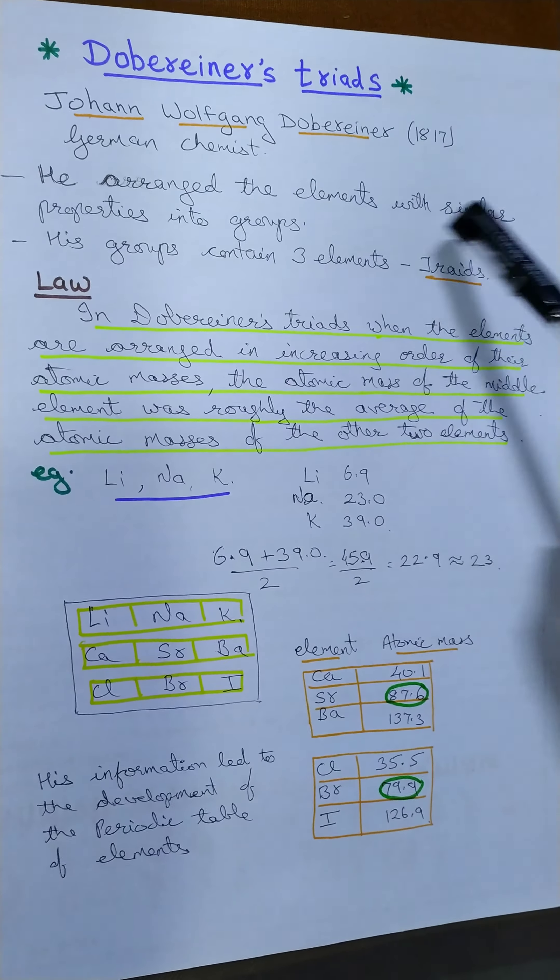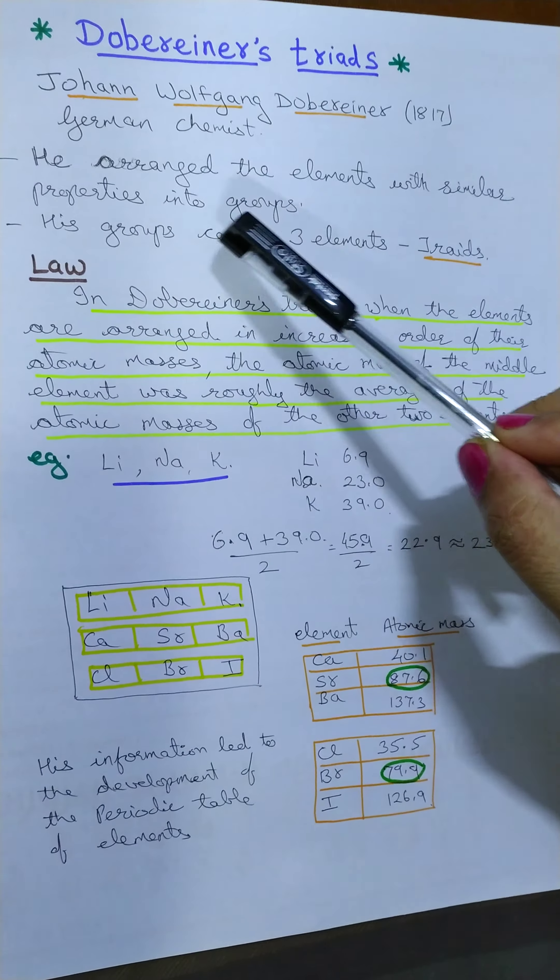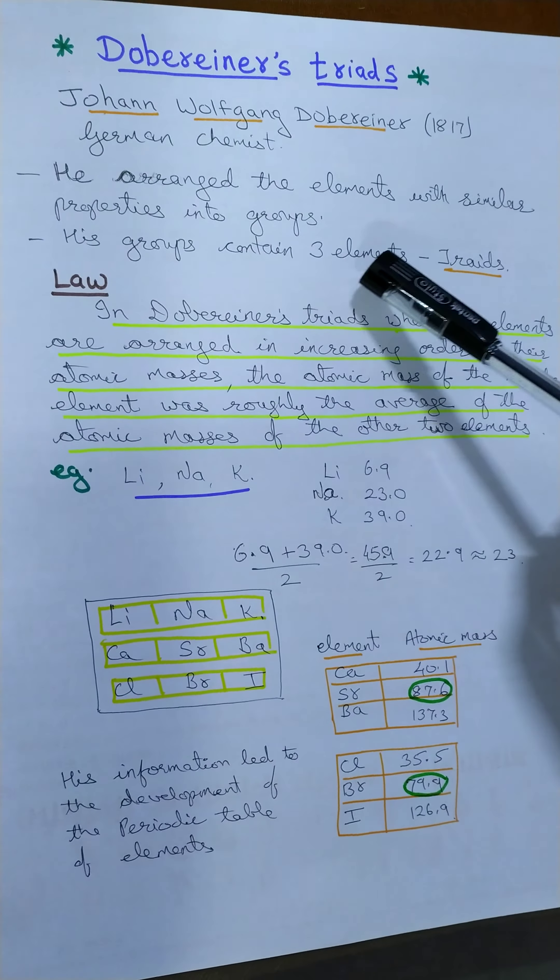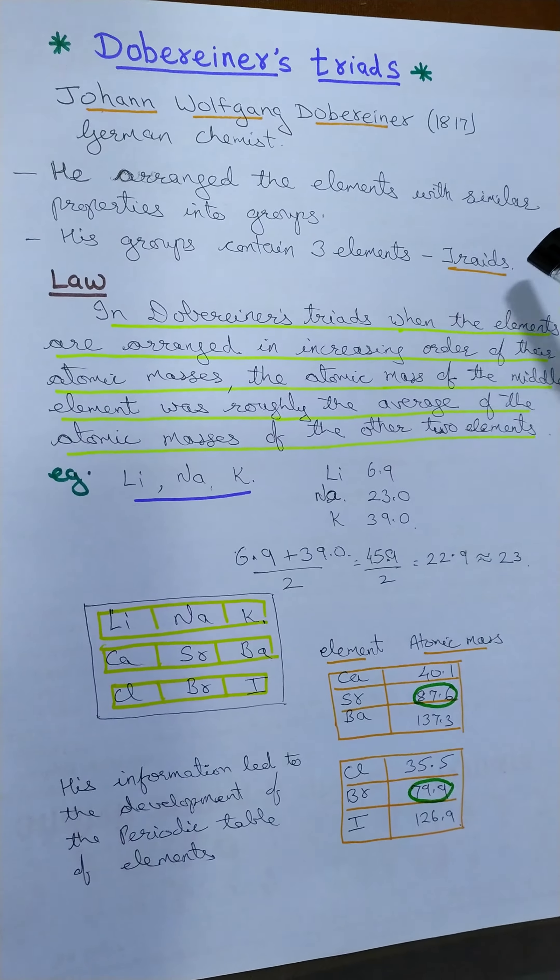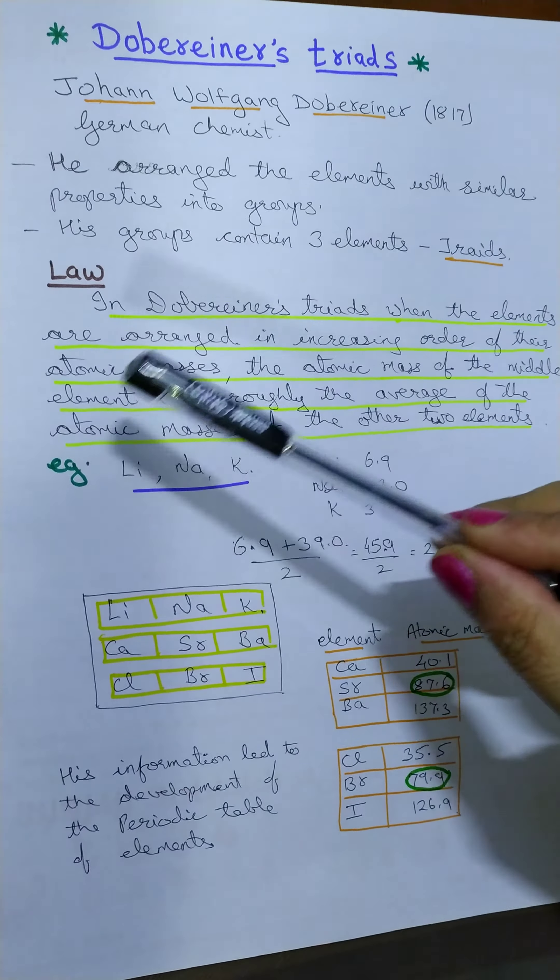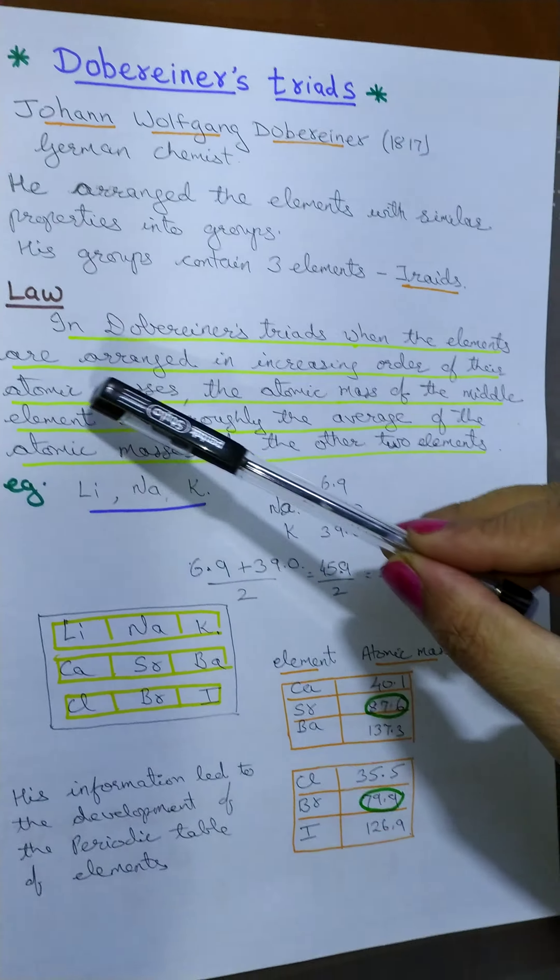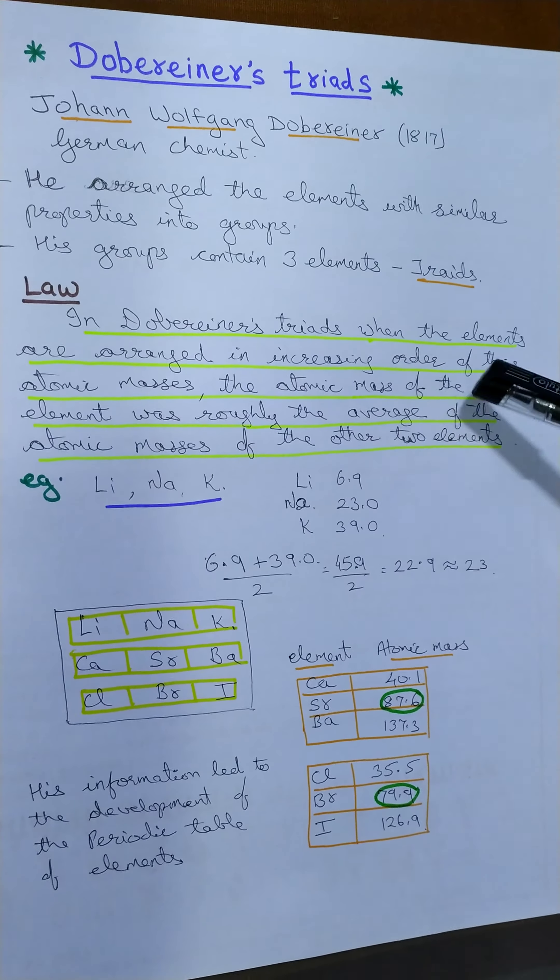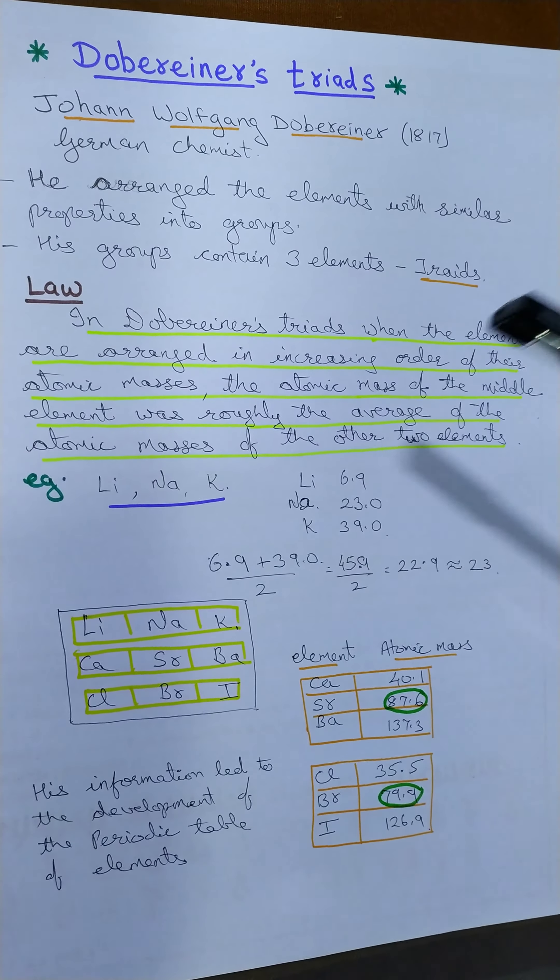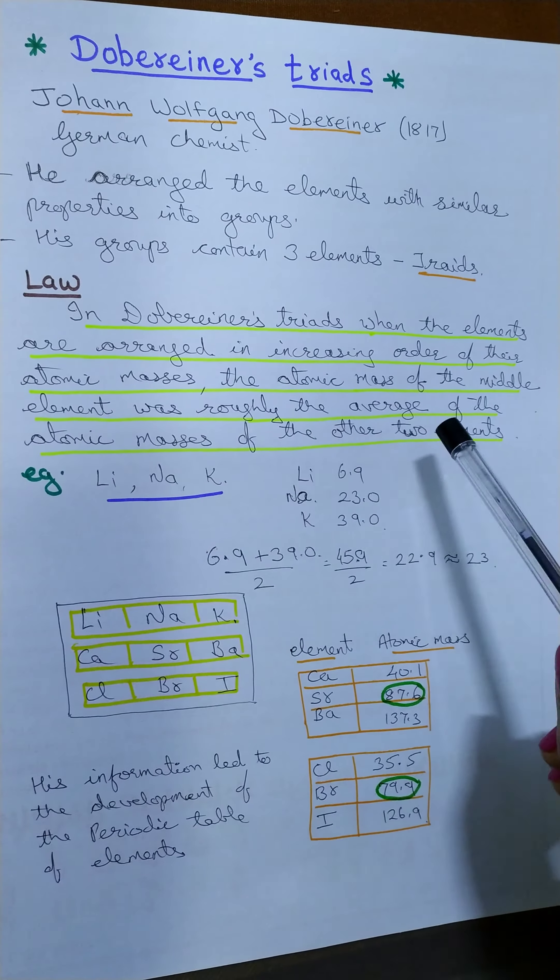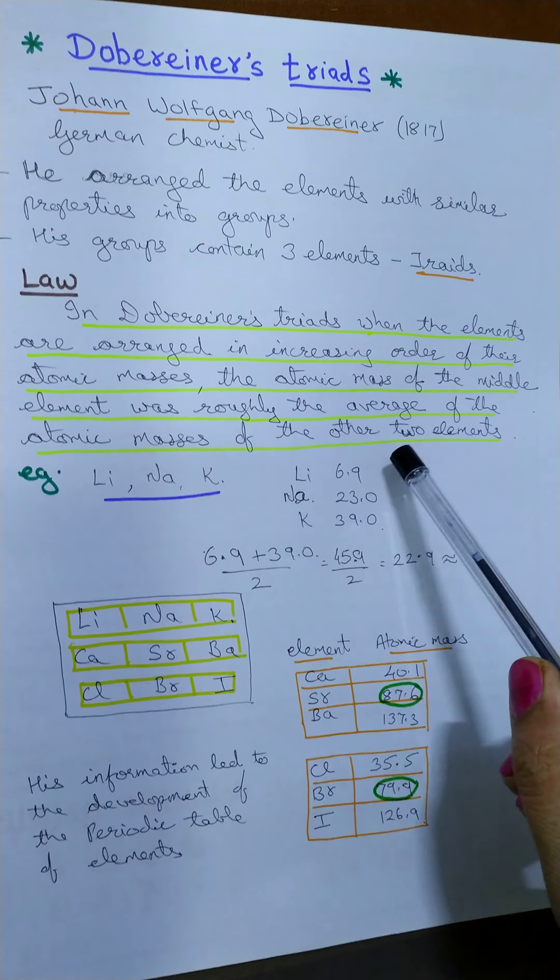He arranged the elements with similar properties in groups. His groups contained only three elements each and hence they were called triads. According to his law, in Dobereiner's triads, when the elements are arranged in increasing order of their atomic masses, the atomic mass of the middle element was roughly the average of the atomic mass of the other two elements.